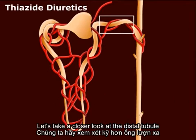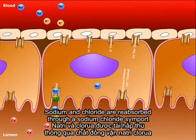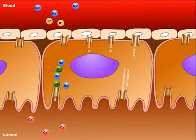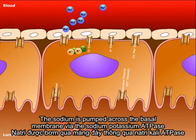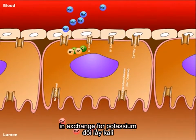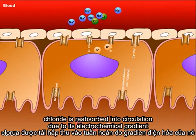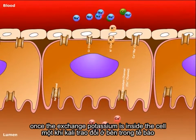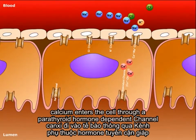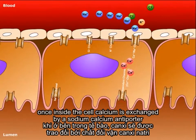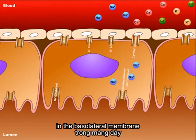Let's take a closer look at the distal tubule. Sodium and chloride are reabsorbed through a sodium-chloride symport. The sodium is pumped across the basal membrane via the sodium-potassium ATPase in exchange for potassium. Chloride is reabsorbed into circulation due to its electrochemical gradient. Calcium enters the cell through a parathyroid hormone-dependent channel, and once inside, is exchanged by a sodium-calcium antiporter in the basolateral membrane.